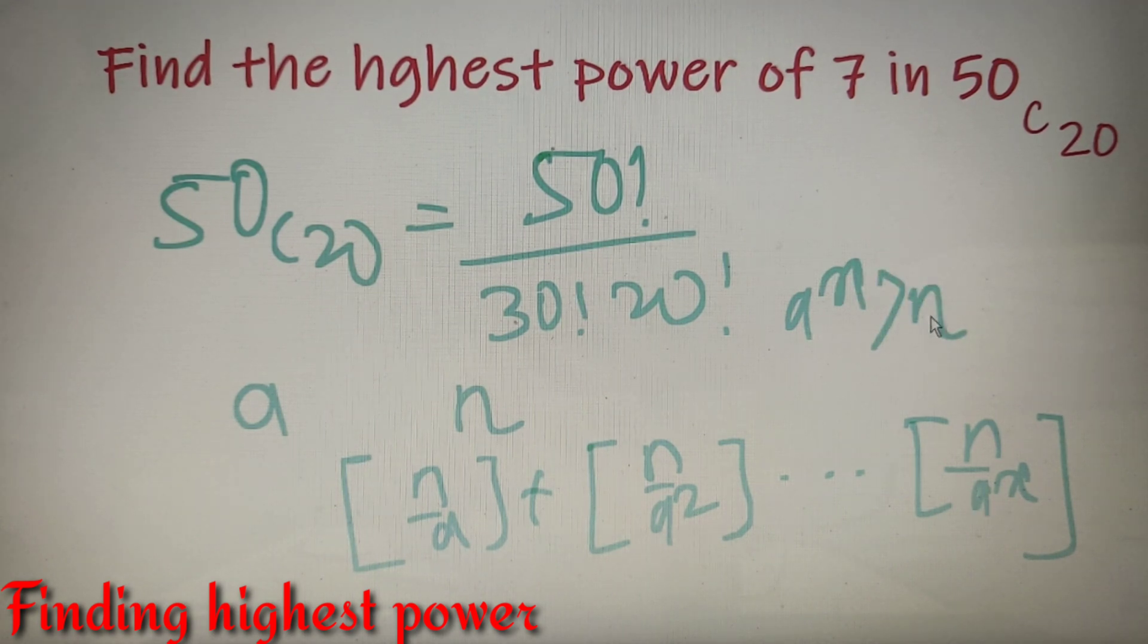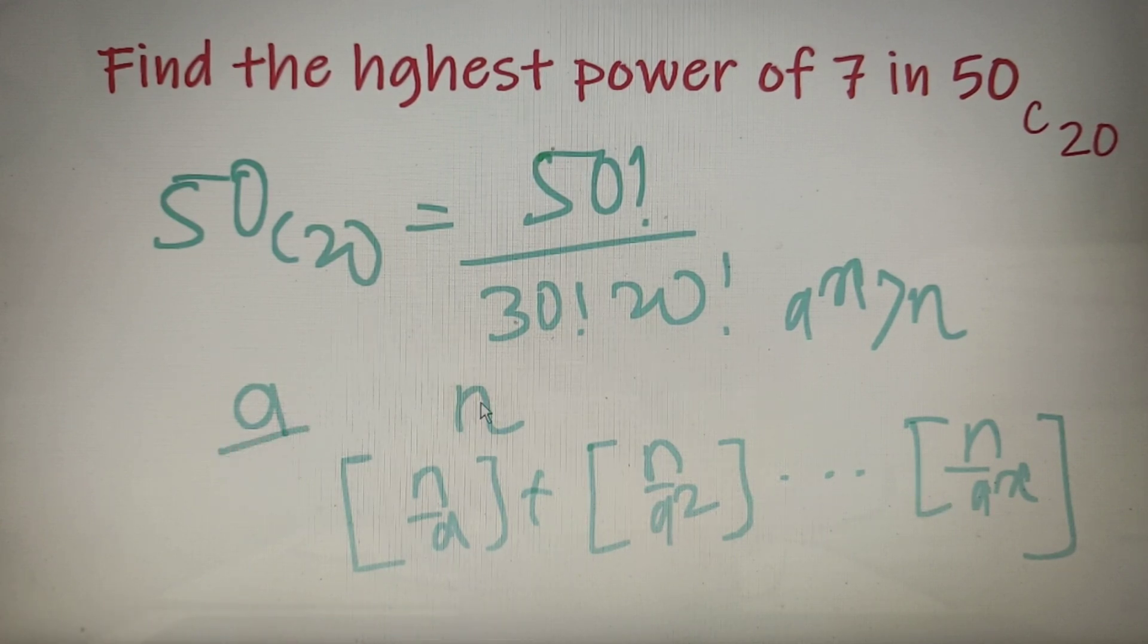At the point where A to the power X is greater than N, we'll stop and calculate this summation, and that will give us the highest power of the number A in that factorial N.